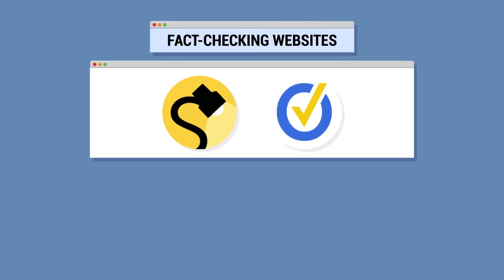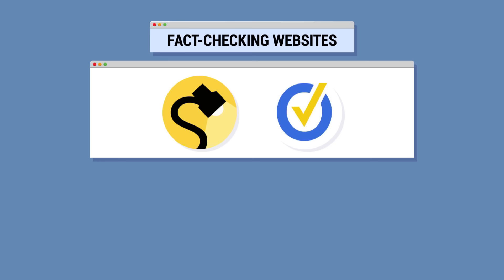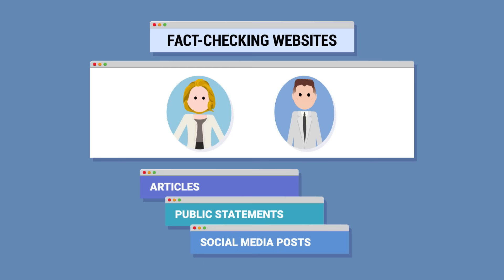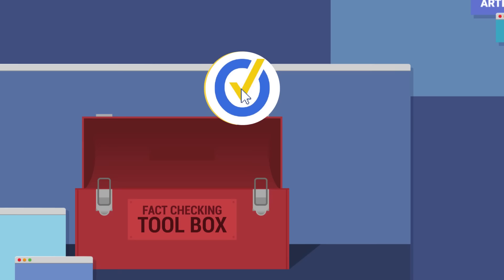Fact checking websites can also be an excellent resource. Sites like Snopes.com and PolitiFact.com are well-respected fact checking sites created by researchers and journalists with the goal of fact checking articles, public statements, and even social media posts. Of course, that doesn't mean they're never wrong, because they are also created by humans, but they do strive to be right. But like every resource, fact checking websites are just one tool in the toolbox.